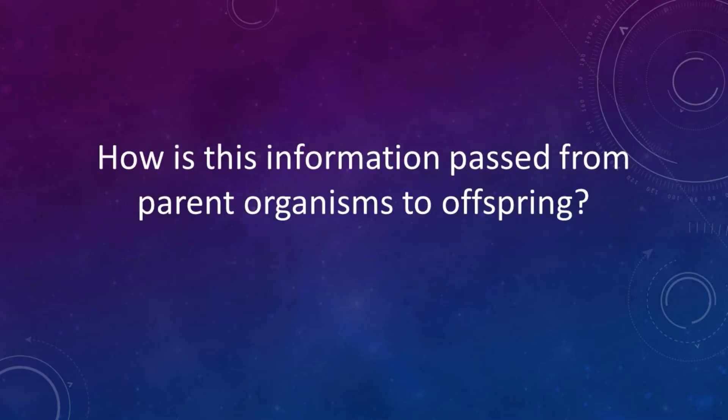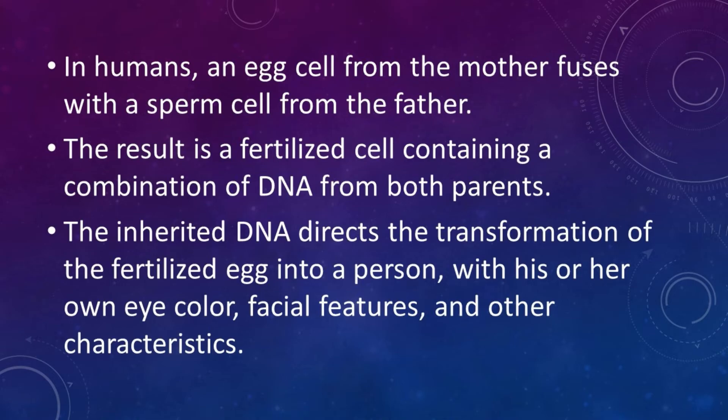How is this information passed from parent organisms to offspring? In humans, an egg cell from the mother fuses with a sperm cell from the father. The result is a fertilized cell containing a combination of DNA from both parents. The inherited DNA directs the transformation of the fertilized egg into a person, with his or her own eye color, facial features, and other characteristics.